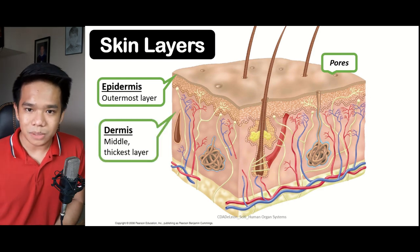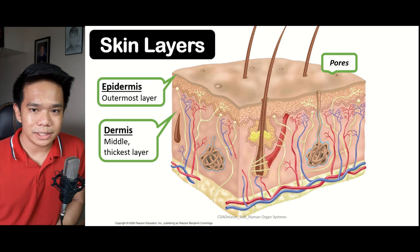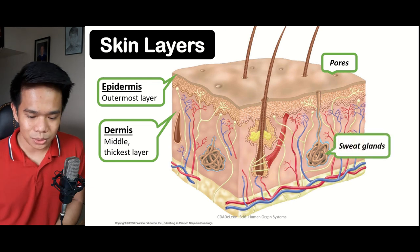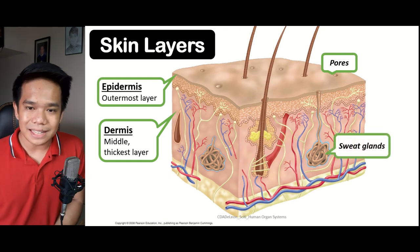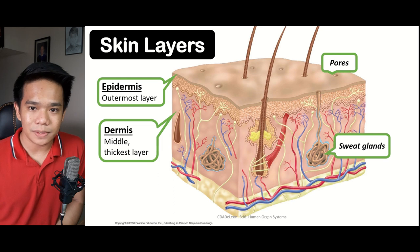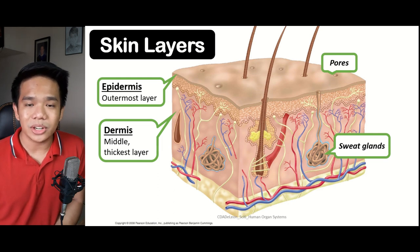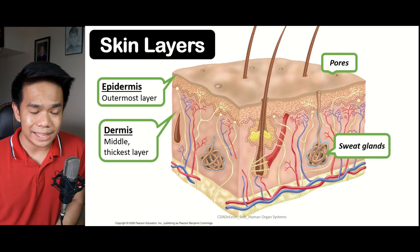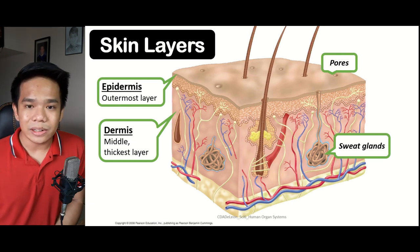The dermis is responsible for the different functions of the skin. Each part of the dermis has a corresponding function. We have the sweat glands, which are responsible for the production of sweat — a combination of excess water and salts in the body. The sweat glands help for the excretory function of the skin, making the skin also an excretory organ.